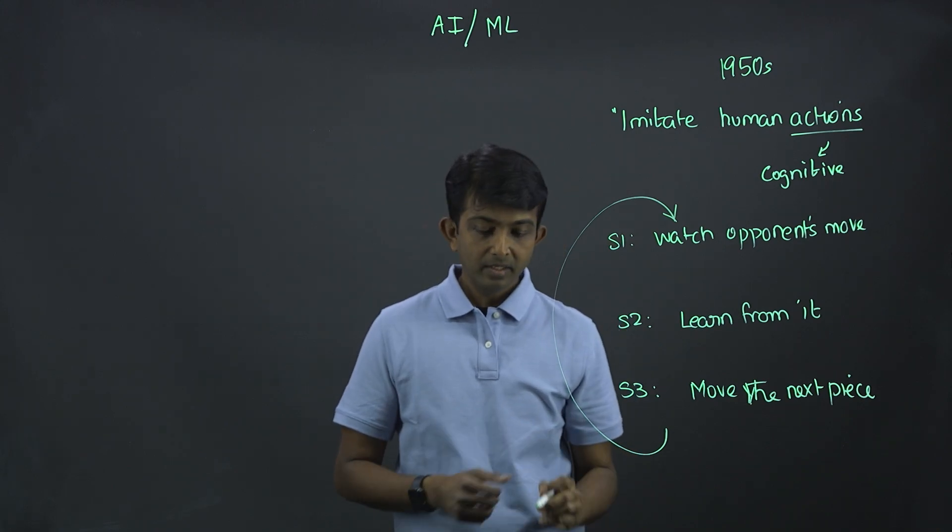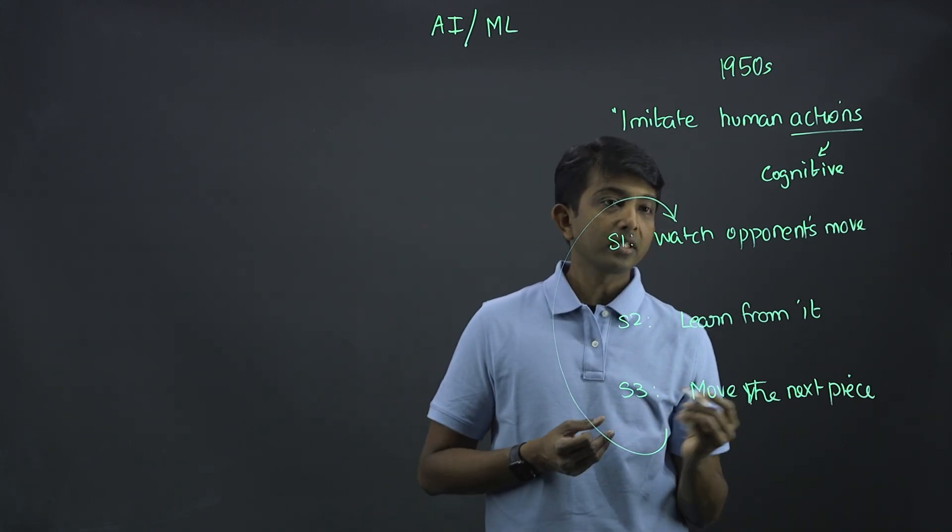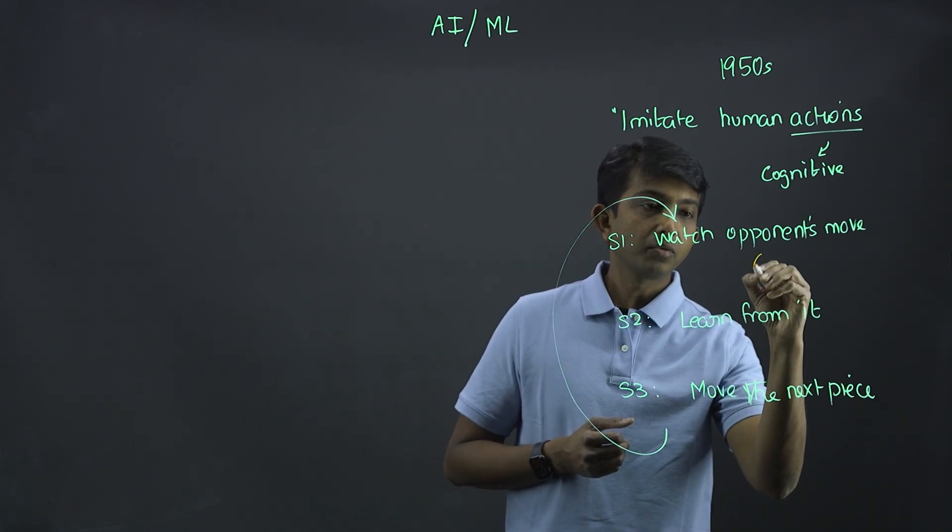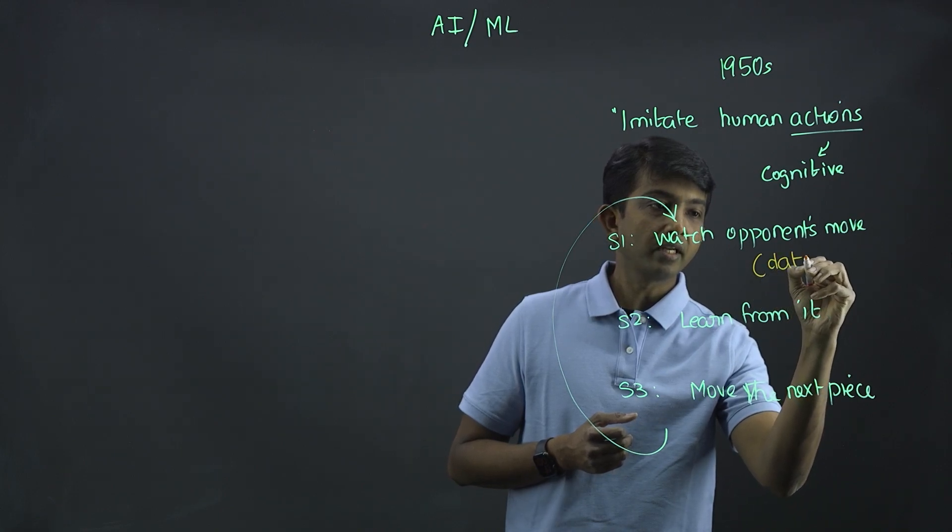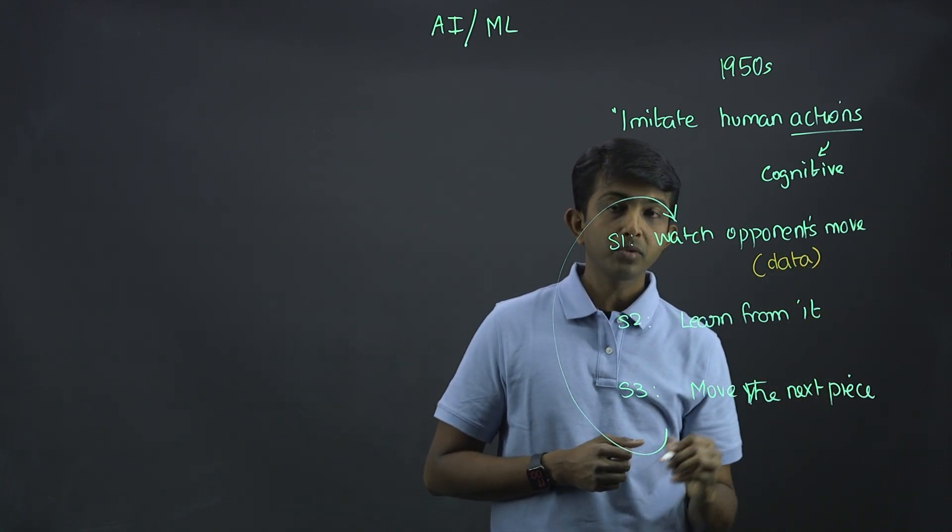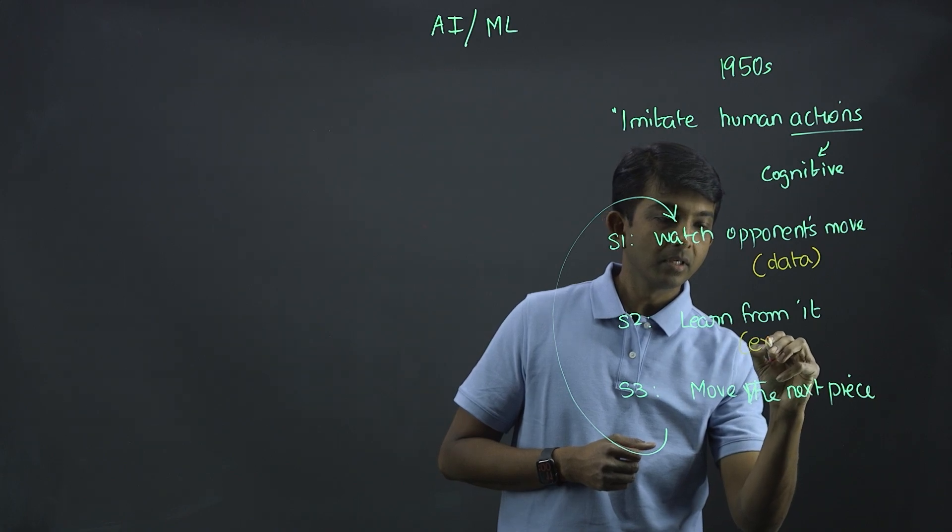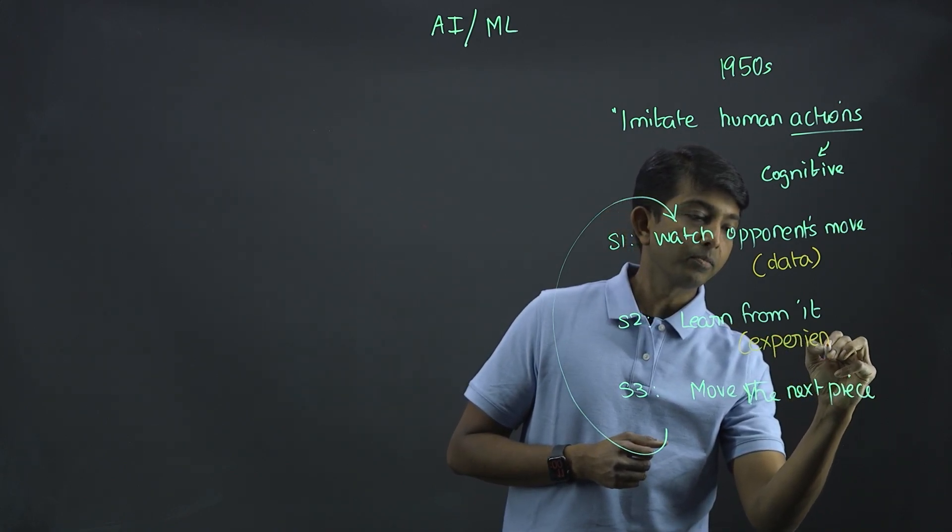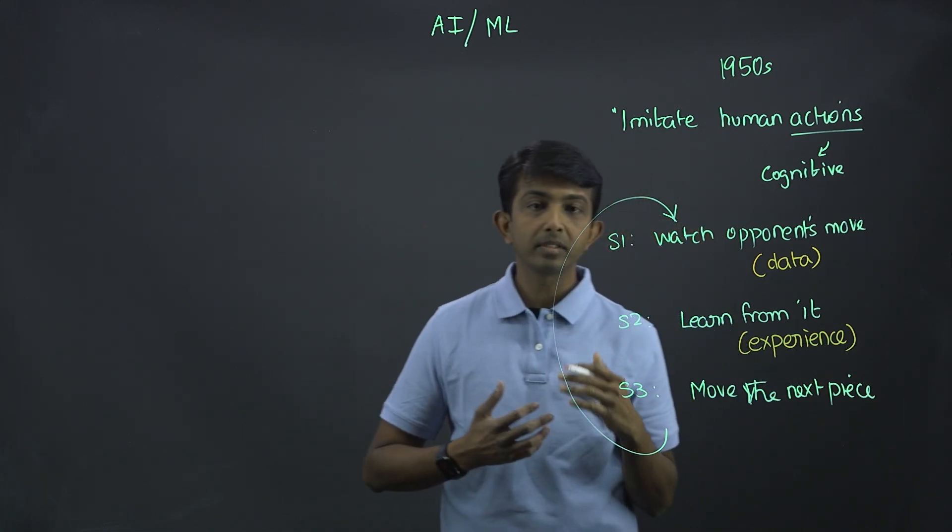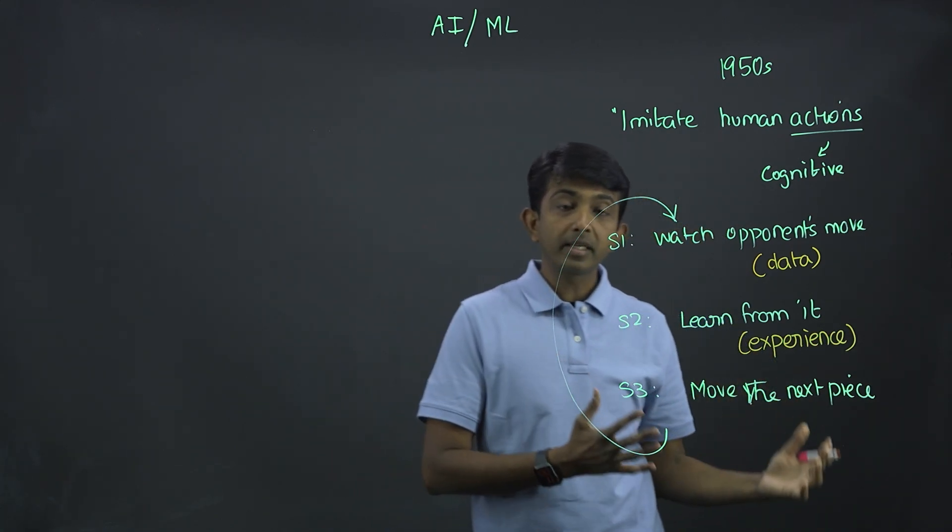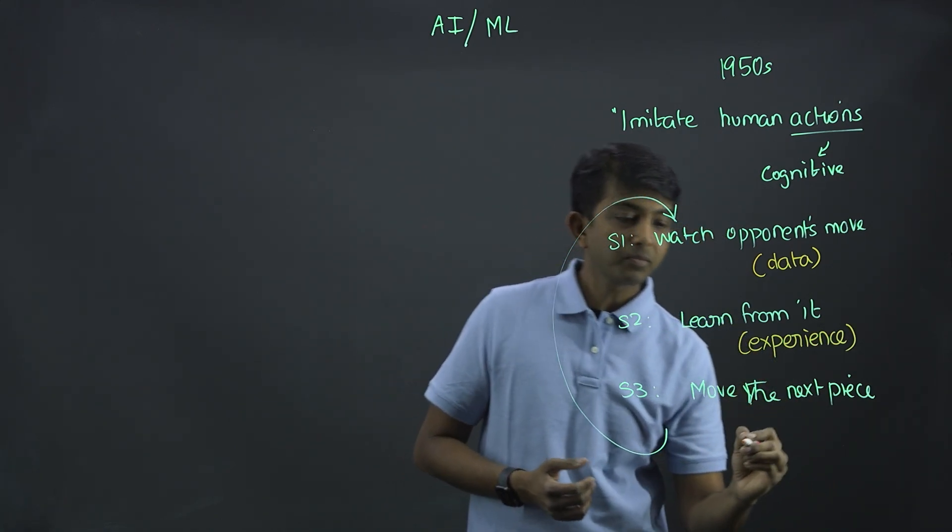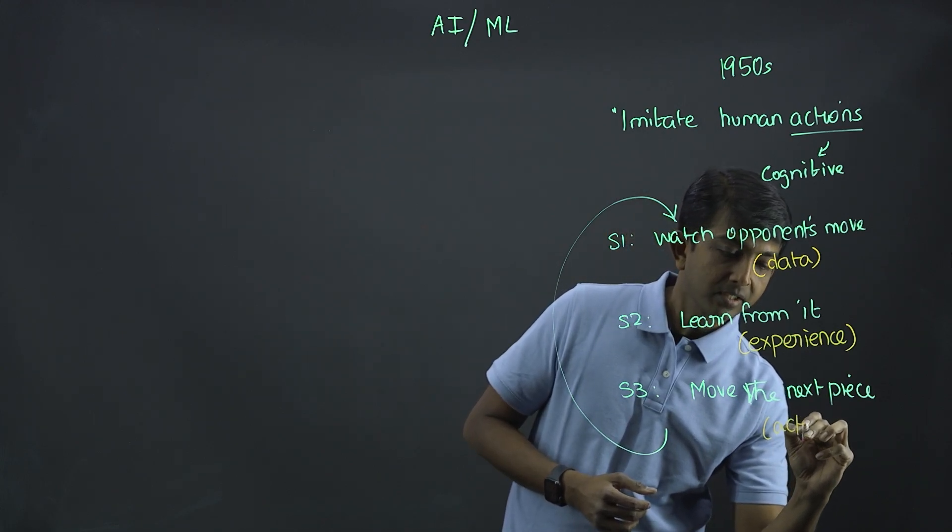And it continues to learn from this. Now, if you look at it, step one is you're watching the opponent's move, which is you're looking at the data. And step two, you're learning from it, which is you're trying to gather knowledge from your experience. You're trying to understand what does that move imply? What could be the next set of possible moves? And step three is the action itself.